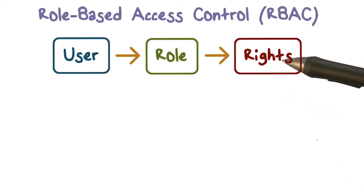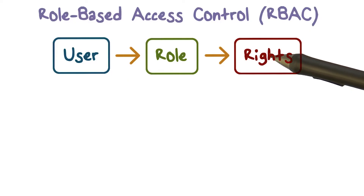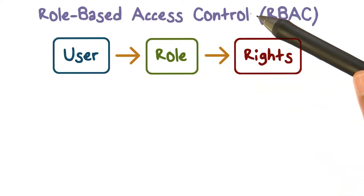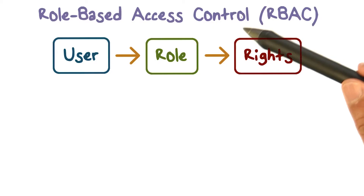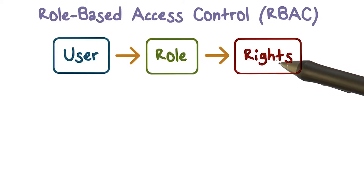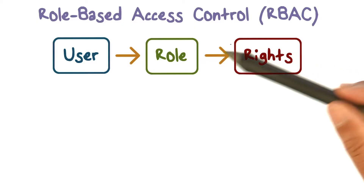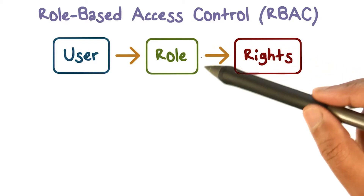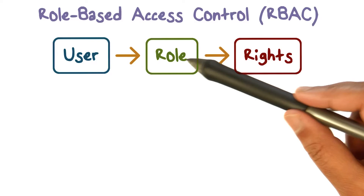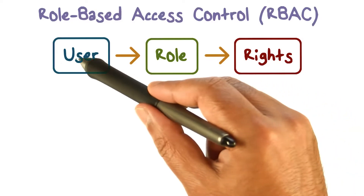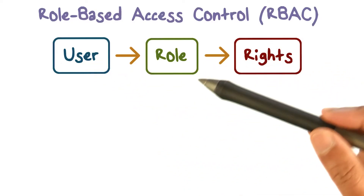In role-based access control, rights — which are for being able to access certain resources — are associated with the role, not with the user. The way to define your access control policy is to say: what roles do I have in my system? And for each role, what resources do they need access to? For example, people in a given role can read these files or write these files. So access rights are defined for roles, and users who authenticate to the system can then take on some roles.